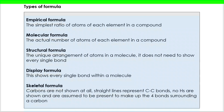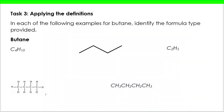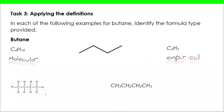Let's look at what that means in practice. I've got butane shown in five different ways — which types of formula are being shown? C4H10 tells us the actual number of each atom: four carbons and ten hydrogens, so that's the molecular formula. To find the empirical formula — the simplest ratio of atoms — four to ten can be simplified to two to five, so C2H5 is the empirical formula.